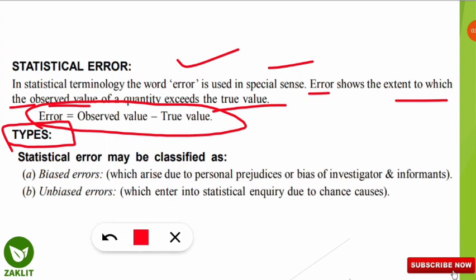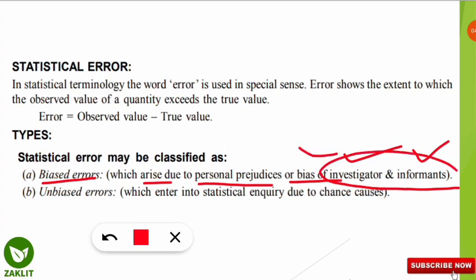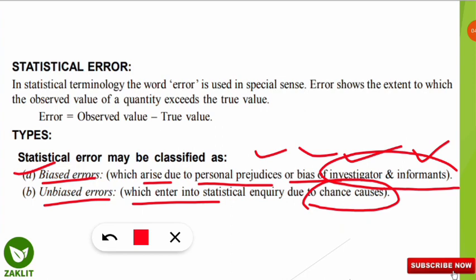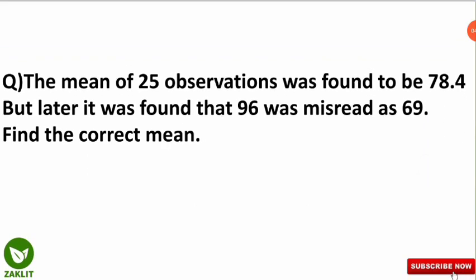Biased errors arise due to the personal prejudices or bias of the investigator and informants. When the investigator or informants are biased, these errors occur. Unbiased errors, on the other hand, enter into a statistical inquiry due to chance causes — not by knowing or by biasness — and are called unbiased errors.